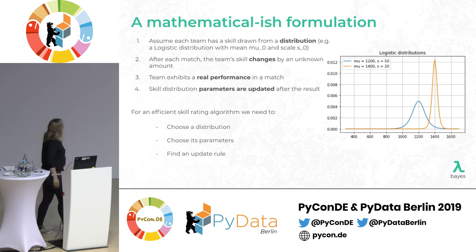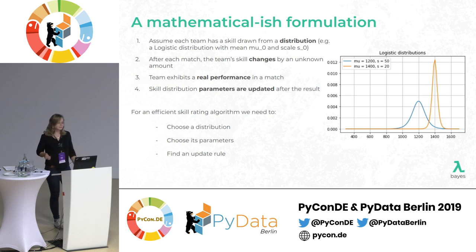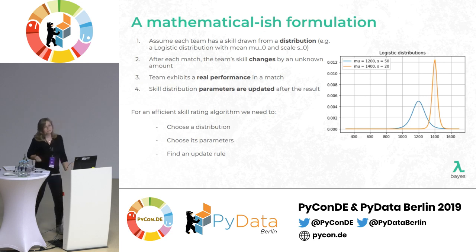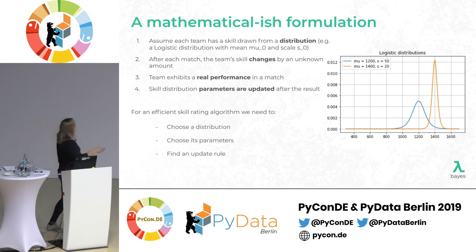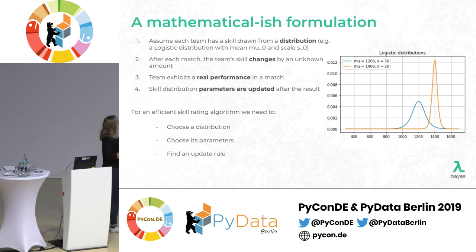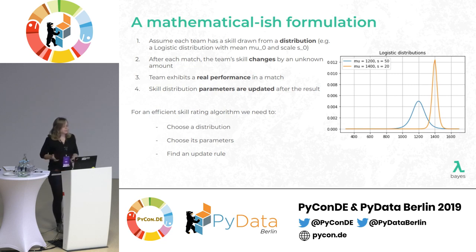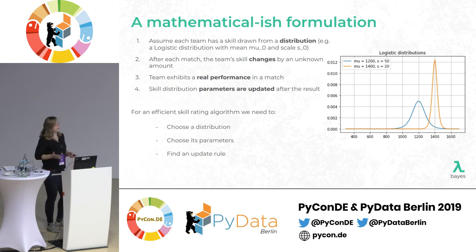Mathematically, why are we talking about Bayesian ratings? We assume we have a skill that is unknown but drawn from a distribution — normally we'll use logistic. After each match, the team's skill will change by an unknown amount. The team plays a match, the real performance is exhibited, and we can update our posterior distribution with this result. In practice, we have a prior distribution, then the player or team plays several matches; here their rating increased and the scale of the logistic decreased, so we've become more certain about their skill. To have a rating algorithm, we must choose a distribution, its parameters, and an update rule for match results.